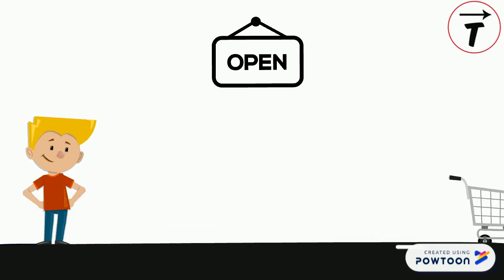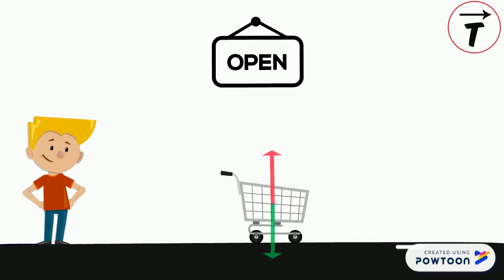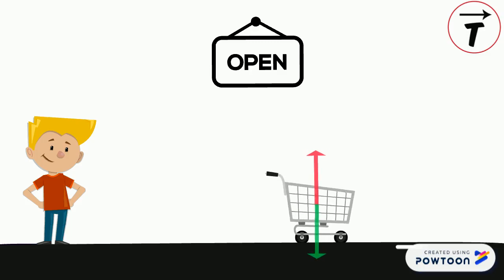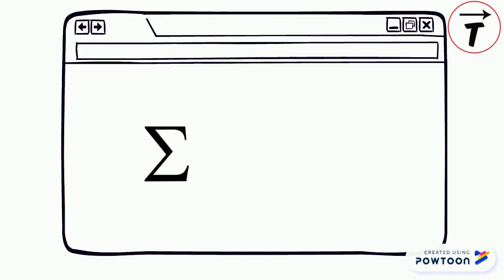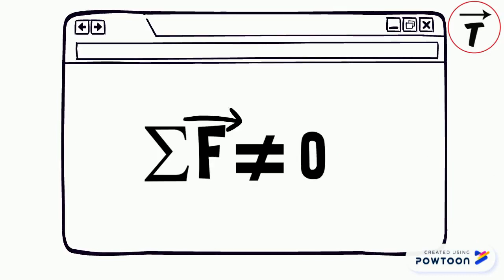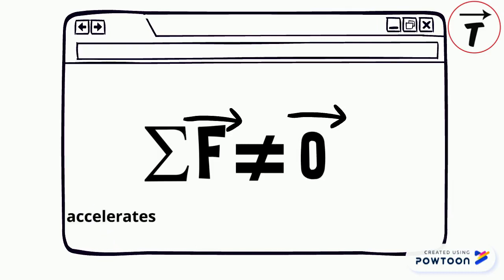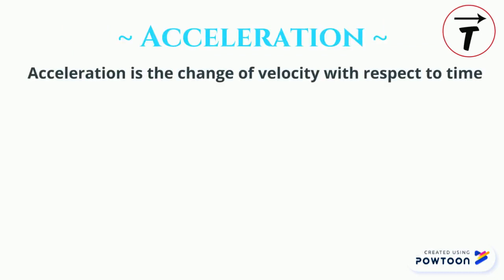The boy applies a pushing force on the cart. When the boy is no longer pushing it, the cart moves at a constant velocity as long as no net force acts on it. How would the cart behave if the sum of forces acting on it is not zero? More specifically, if the sum of forces is equal to a constant, the cart accelerates.